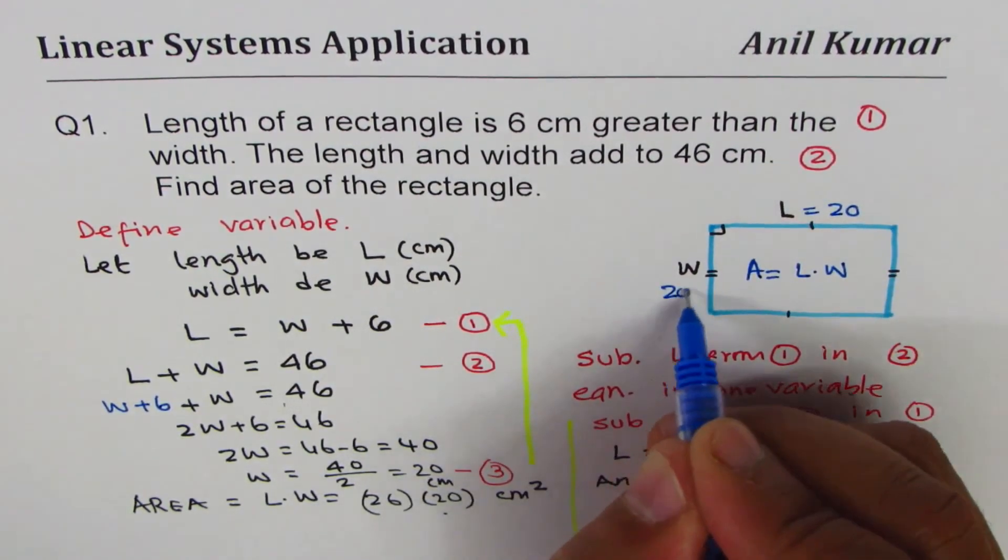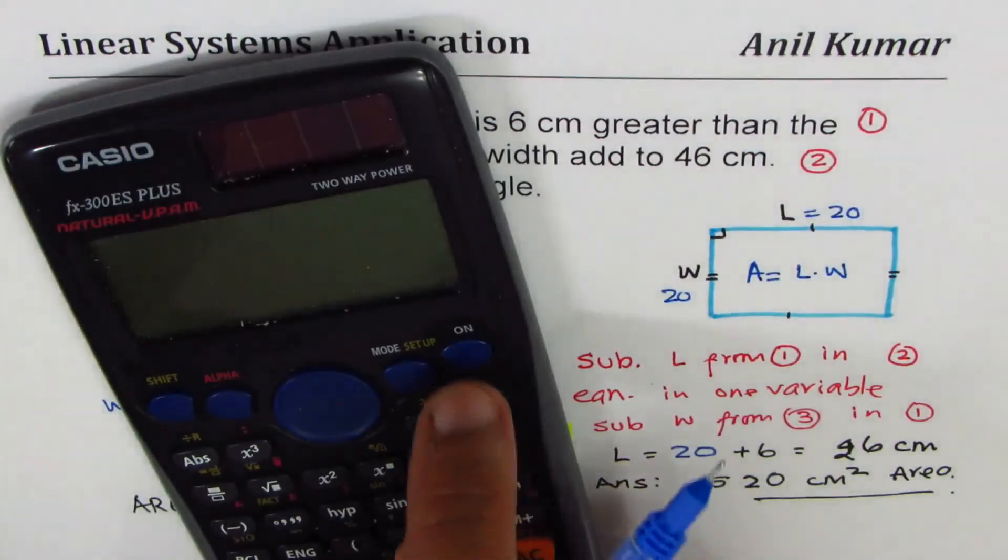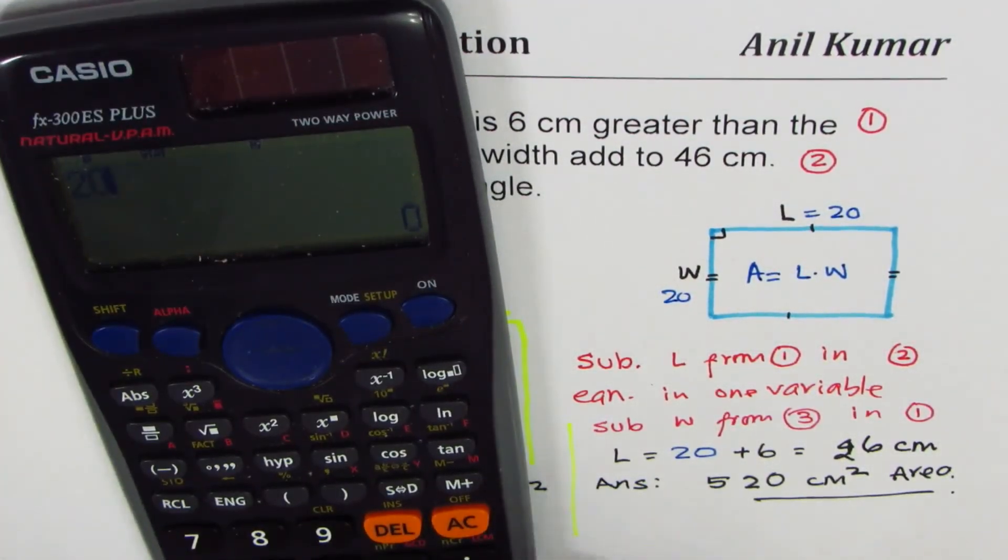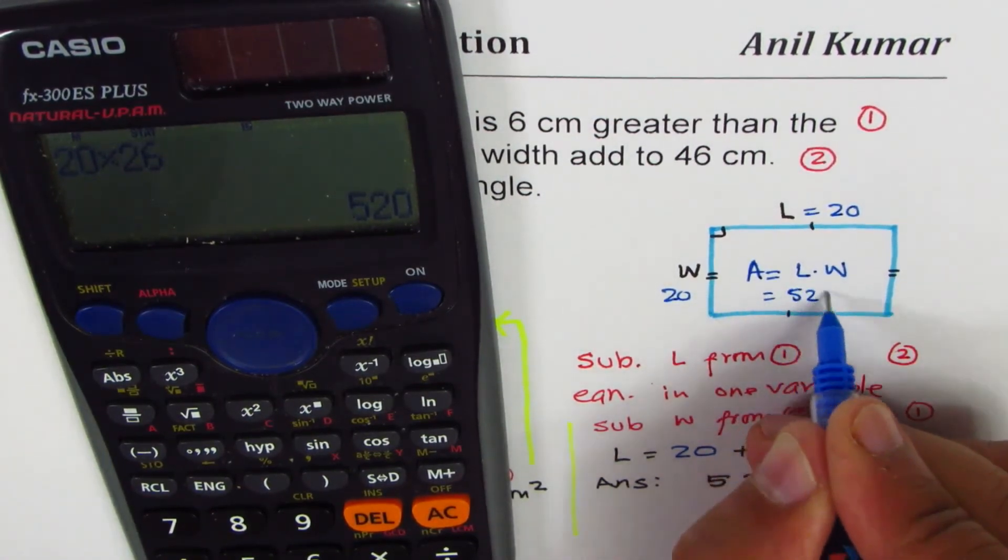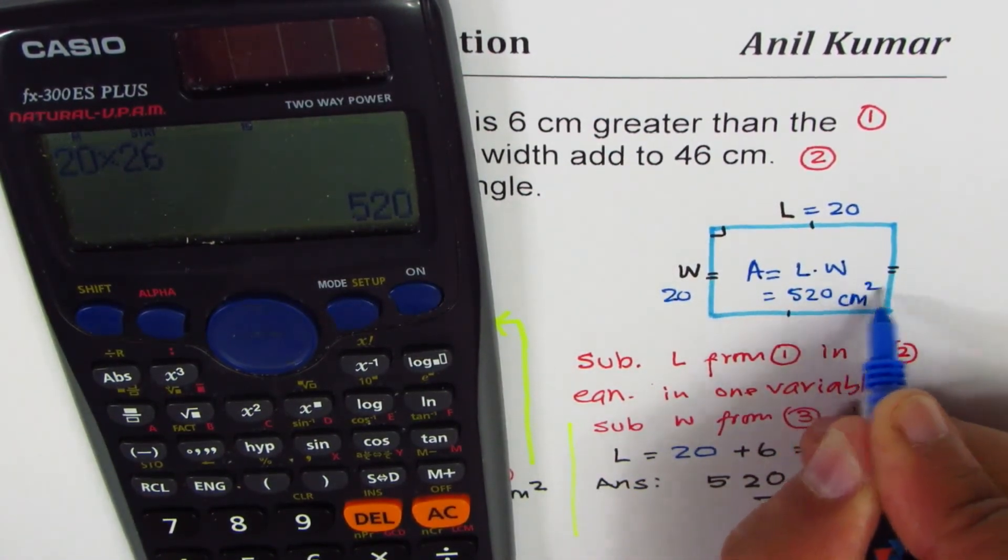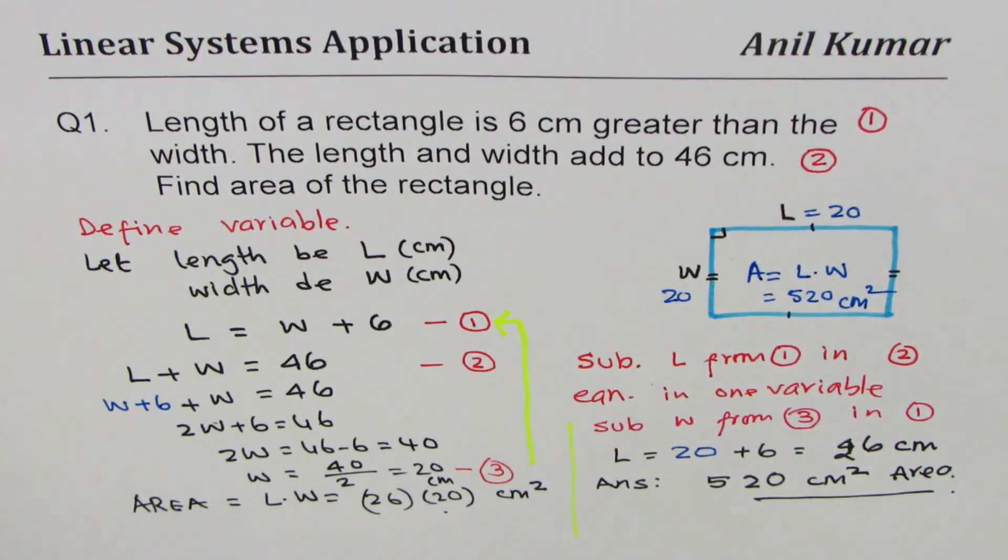Length we found as 26, width was 20, and the area was 20 times 26 equals to 520 cm squared.